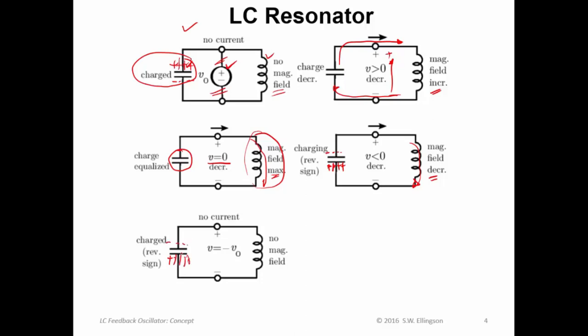And what eventually happens is that we run out of current because the charge now is completely redistributed. So that we have all the plus charges on the bottom. All the minus charges on the top. No current flowing so there could be no magnetic field. And what we have at the terminals here is minus v naught. We start off with plus v naught. Now we have minus v naught.